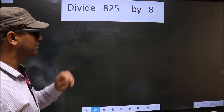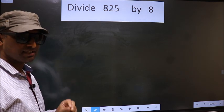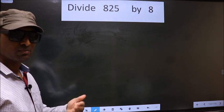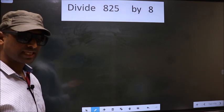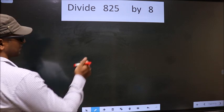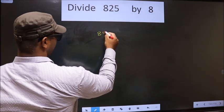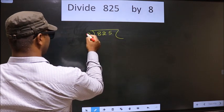Divide 825 by 8. While doing this division, many do this mistake. What is the mistake that they do? I will let you know. But before that, we should frame it in this way. That is 825, 8 here.